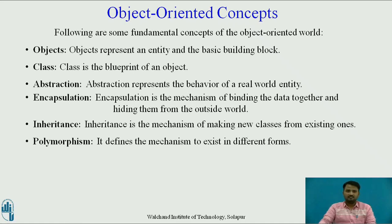Next is Class. Class is the blueprint of an object. Object Abstraction represents the behavior of a real-world entity. Encapsulation is the mechanism of binding the data together and hiding them from the outside world. Inheritance is the mechanism of making new classes from existing ones. Polymorphism defines the mechanism to exist in different forms.